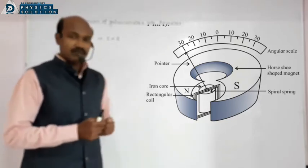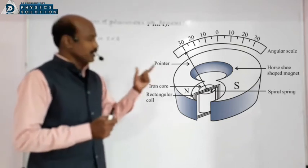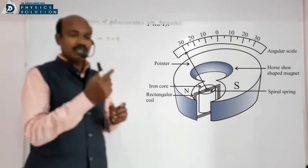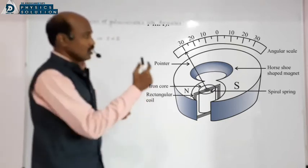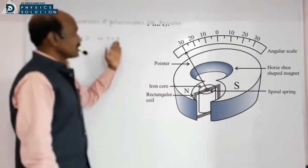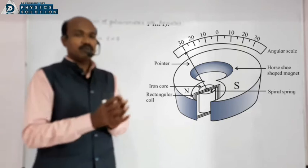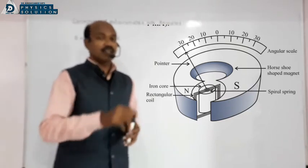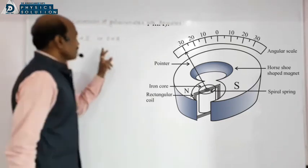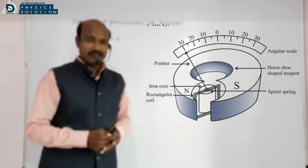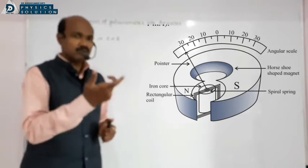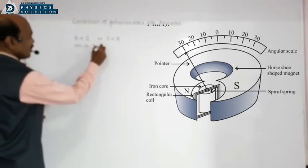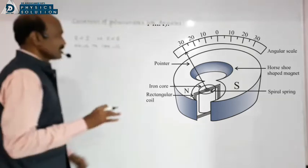There are two types: pivoted type galvanometer, where the coil is placed between horseshoe bar magnets, and suspended type moving coil galvanometer, where the coil is literally hanging in suspended position between horseshoe magnets. Ammeter and voltmeter are pivoted type; ballistic galvanometer is an example of suspended type. The coil of the galvanometer is very delicate and its resistance is very small.